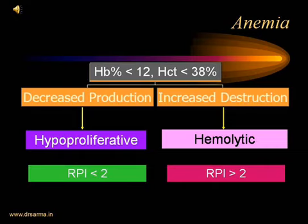Any patient of anemia can be either hypoproliferative, hemolytic, or hemorrhagic. Hemorrhagic anemias can be distinguished clinically, but hemolytic and hypoproliferative anemias can be distinguished only based on the RPI. In hypoproliferative anemia, the reticulocyte production index will be less than 2; in hemolytic anemia, it will be more than 2%.